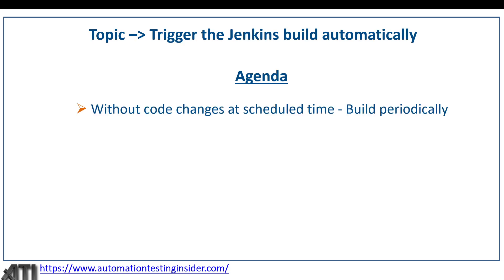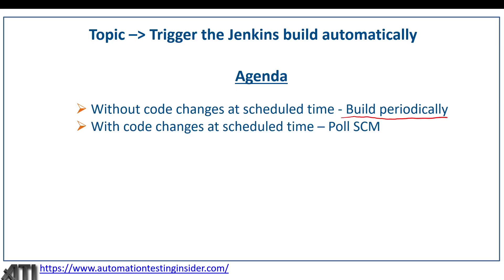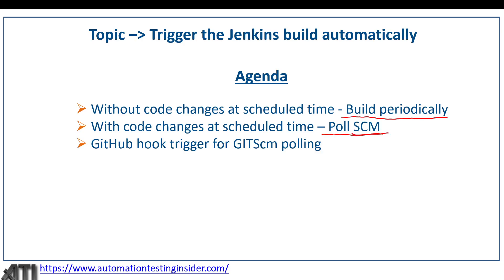The agenda for today covers three ways to trigger a Jenkins build. First, how to run the build without code changes at a scheduled time using the 'Build Periodically' option. Second, with code changes at a particular time interval using 'Poll SCM' — which stands for source code management. Third, the 'GitHub Hook Trigger for Git SCM Polling', which triggers the build automatically whenever there is a code change pushed to the GitHub repository.